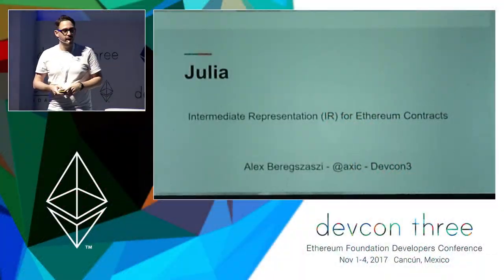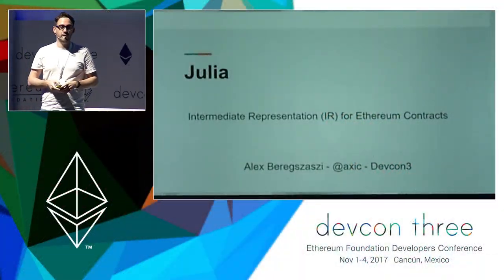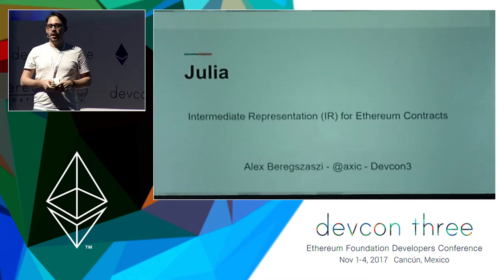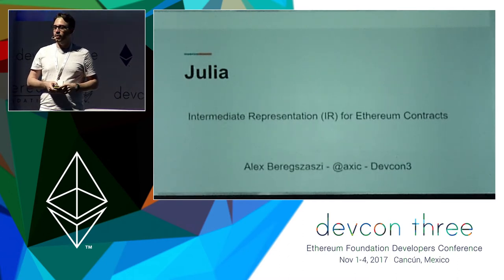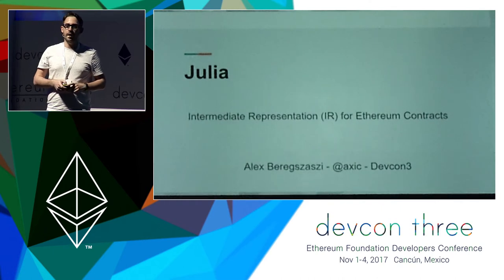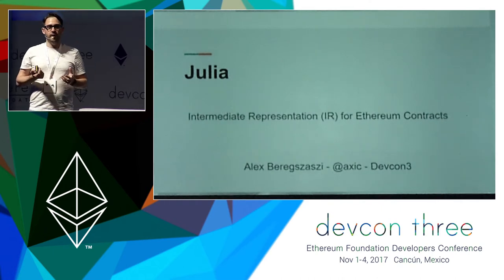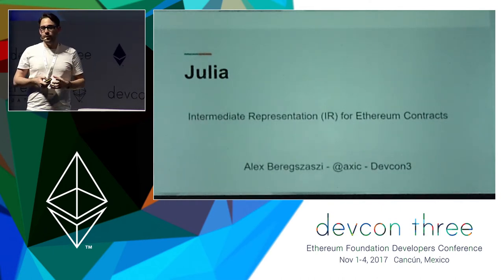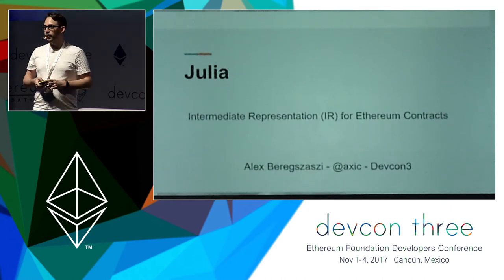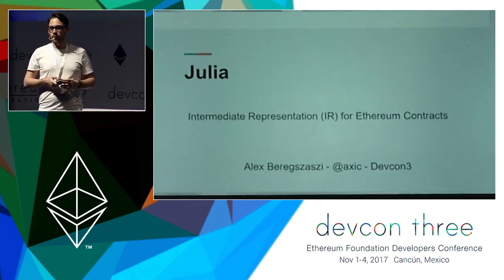Hello everyone. I'm going to talk about Julia, which is an intermediate representation or intermediate language for Ethereum contracts. Let's first see what the problems are — why would we need a new language, or am I just crazy that we need a new language?